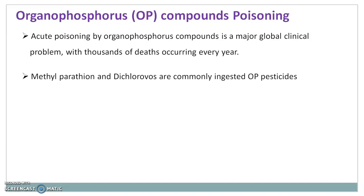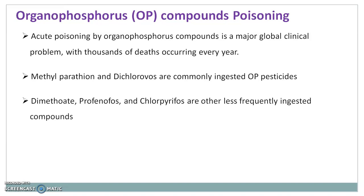Methylparathion and dichlorophose are commonly ingested organophosphorus pesticides. Dimethoate, prophenophose, and chloroparaphose are other less frequently ingested compounds.